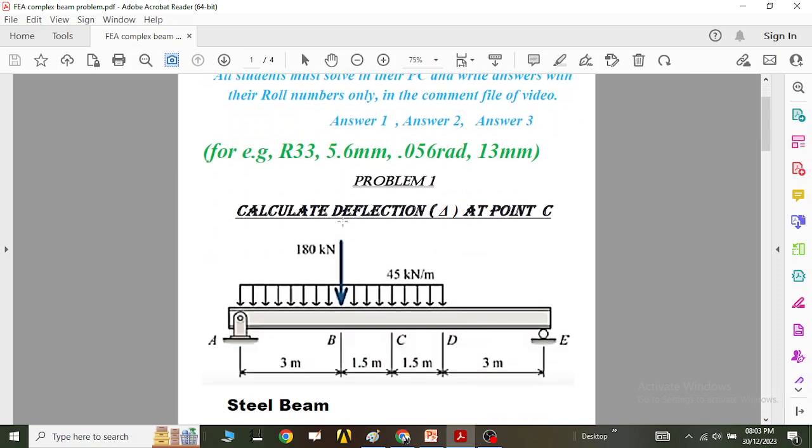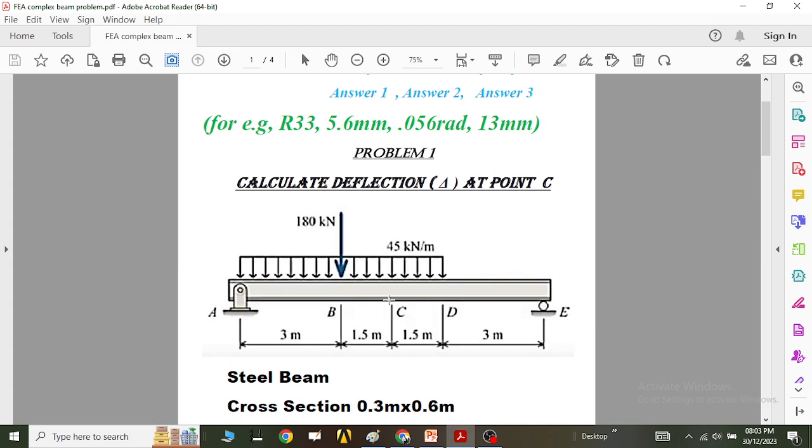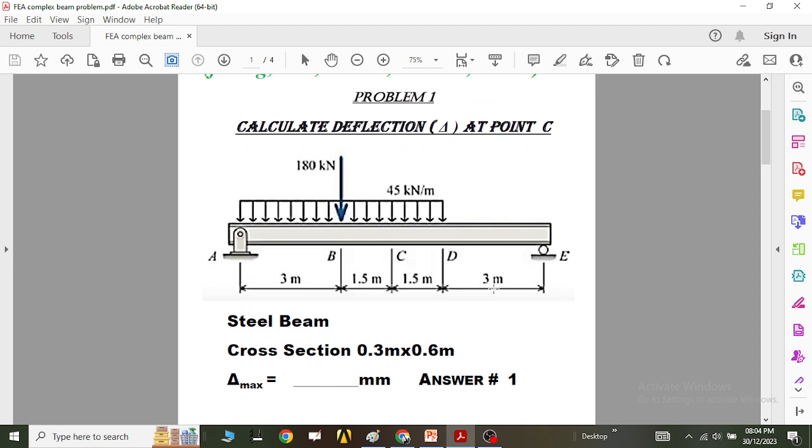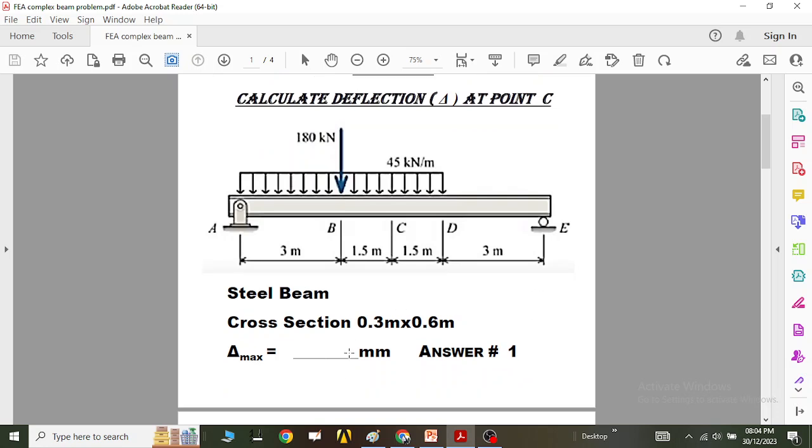For problem 1, I have given you to calculate deflection at this unique point C. Remember, we have already solved this problem analytically, on MDS, and already been done on the GCR. And I have given you an ideal cross section 0.3 into 0.6 mm.